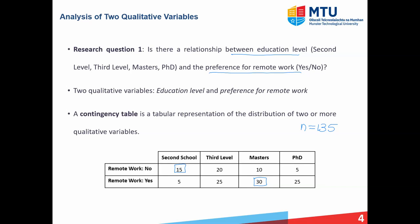With the table, you can start doing things like getting the proportion or percentage of people who have a master's and have a preference for working at home. In that case, it's just the relative fraction of 30 over 135. You can also ask: of the people who have an education level of a master's, what percentage want to work from home? The total number of people with a master's is 40, and the number who prefer working remotely is 30, so we get 30 over 40, which is 75%. So 75% of those with a master's have a preference for working from home.